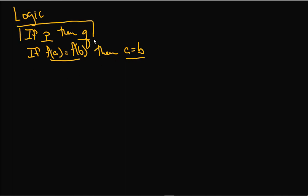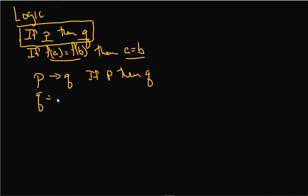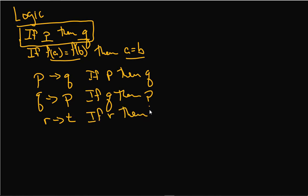In mathematics we often have forms like that. We can take this and represent it with symbols. So this is: if P, then Q — written with an arrow. And if we wrote this, that would be: if Q, then P. And if I had R and T, this would be: if R, then T. So what's the relationship between a statement like P arrow Q, meaning if P then Q, and the statement Q arrow P?